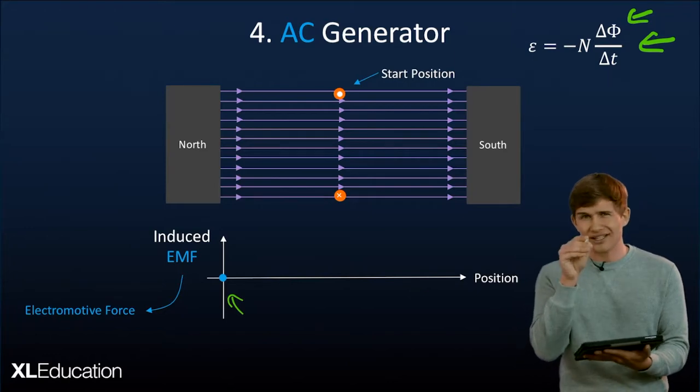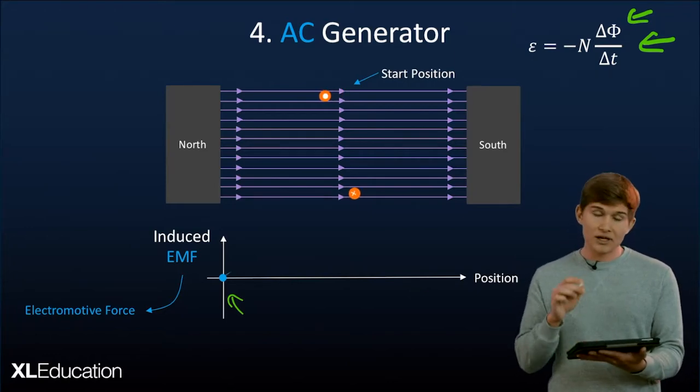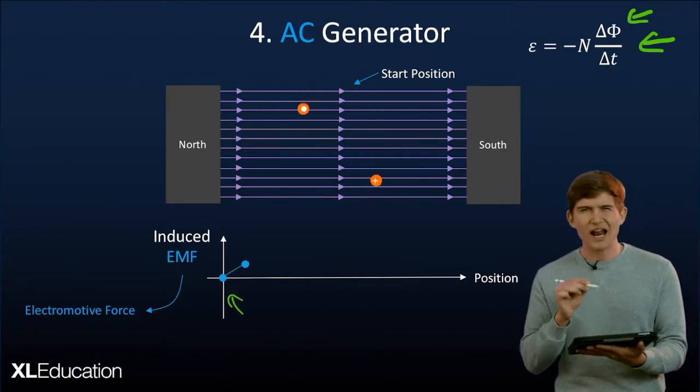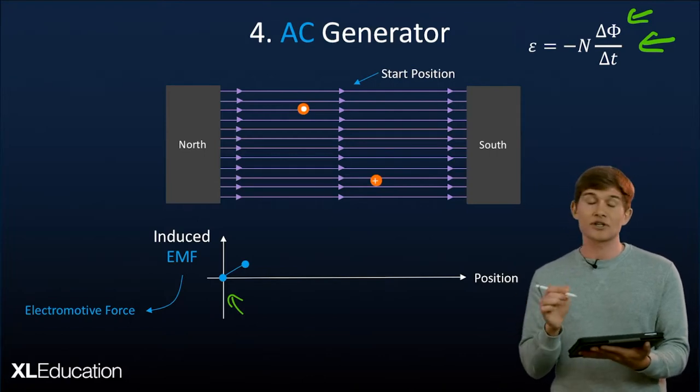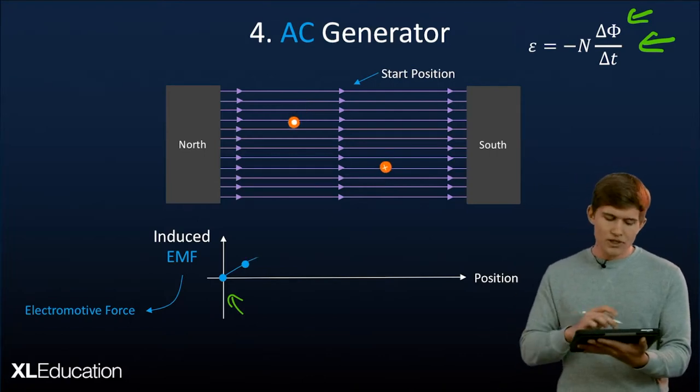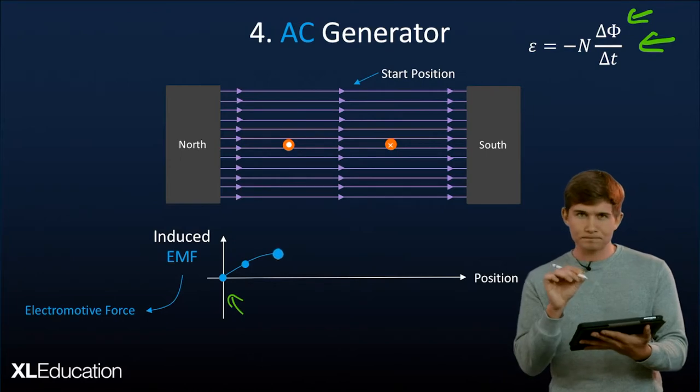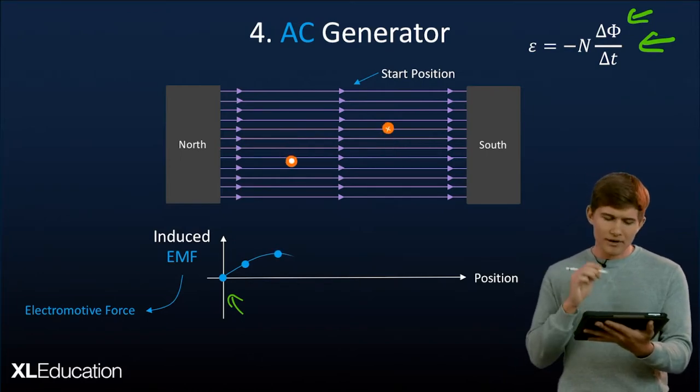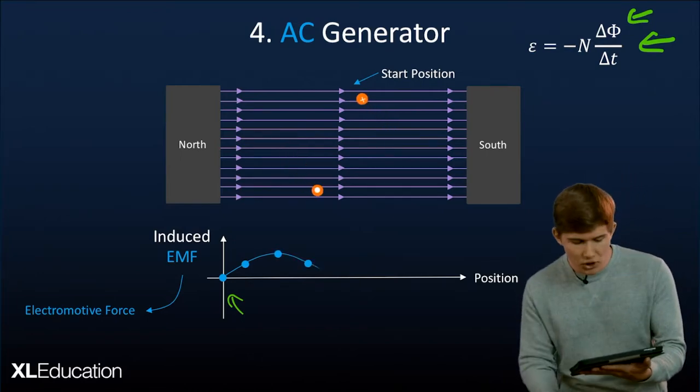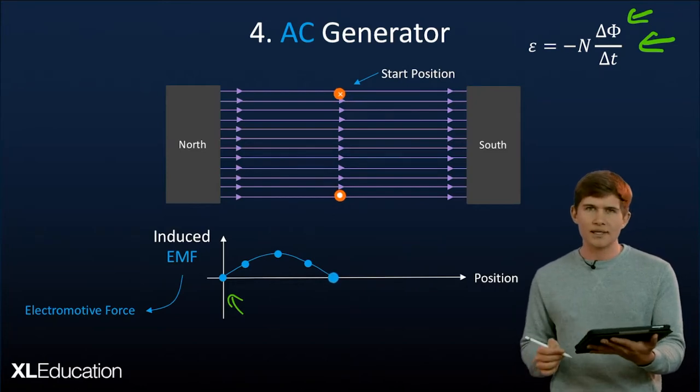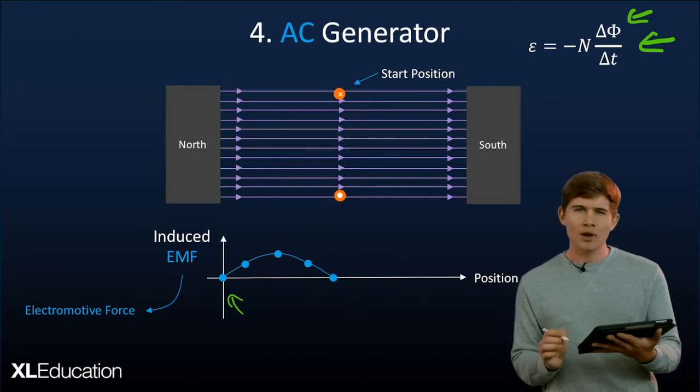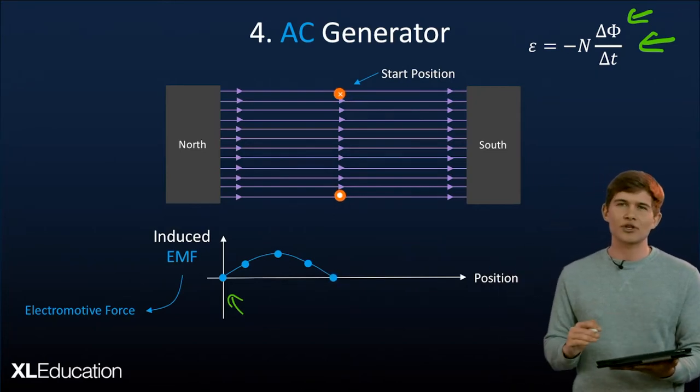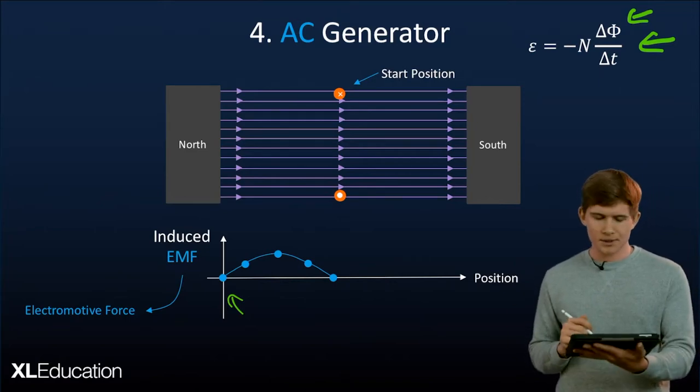But now as it starts rotating it's going to induce the force. Sorry, induce the current because it's going to start cutting through very few. So it's going to cut through very few magnetic field lines. So it's not a lot but it's not a maximum either. Sorry, it's not zero either. But then it goes and it continues rotating until it's a maximum. And that maximum is where it now goes over the max and then starts decreasing again because it's going through fewer lines until it reaches that zero point again where the direction of motion is in the same direction or parallel to the direction of the field lines.